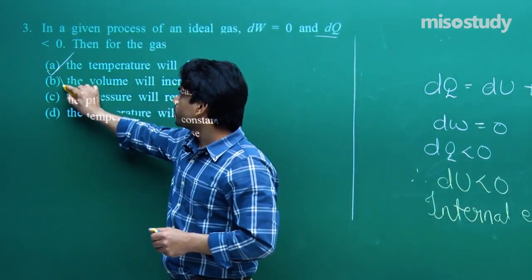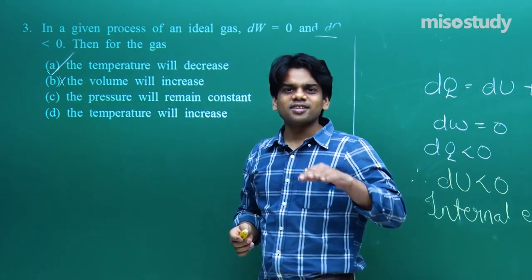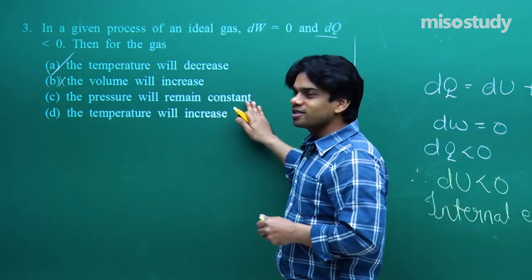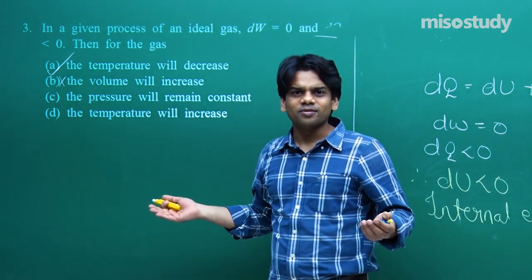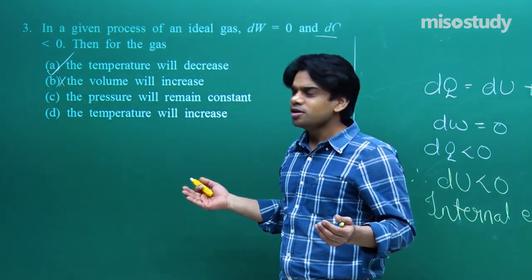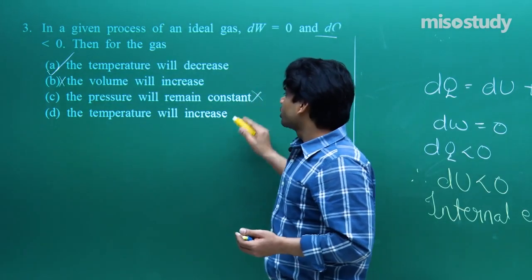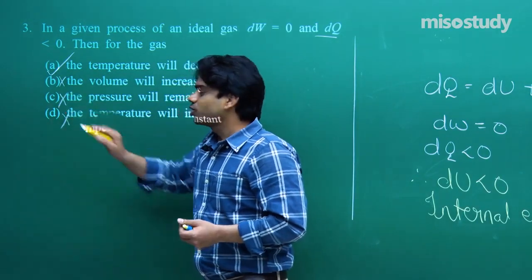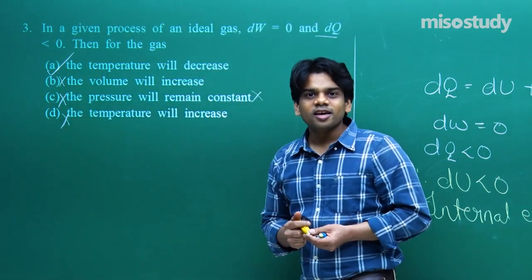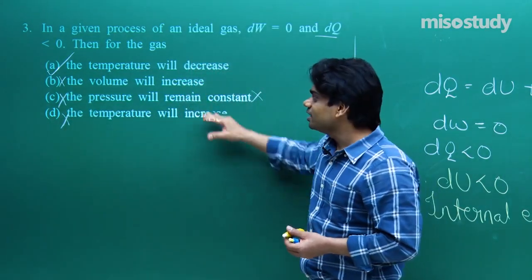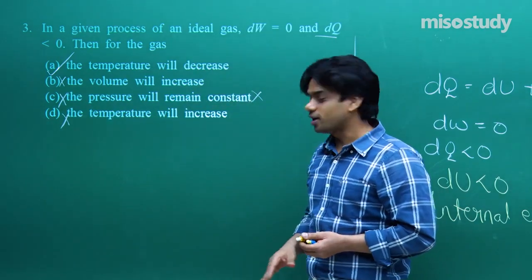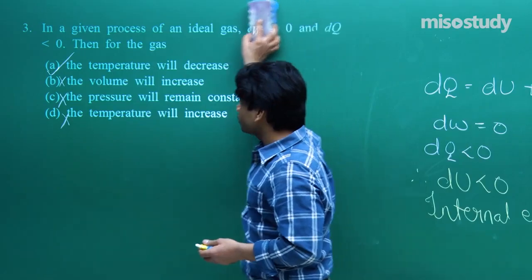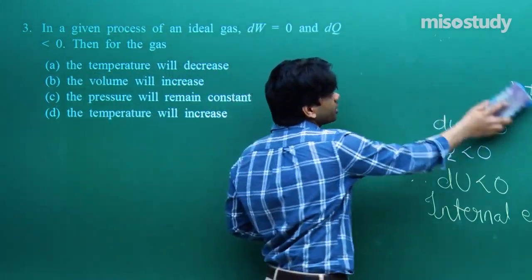For the other options: volume is held constant (dW = 0 means no volume change), so we cannot say volume increases. Pressure remaining constant is not required since the piston is held fixed. Temperature increasing contradicts our result. So options B, C, D are all incorrect, and option A is the only correct answer.